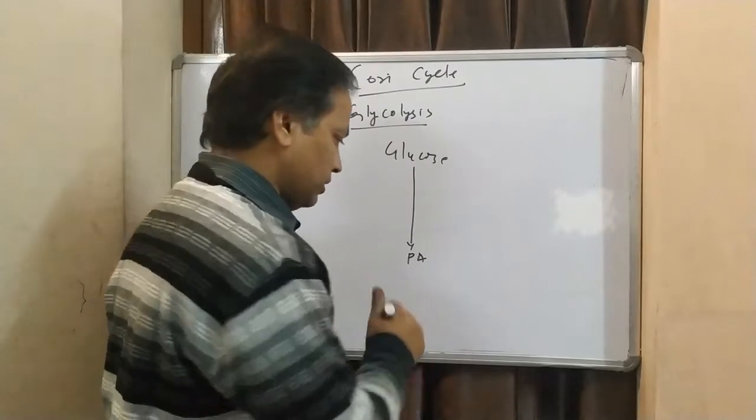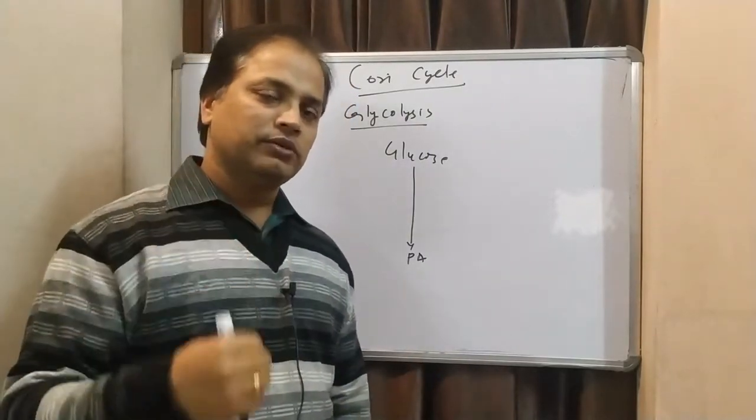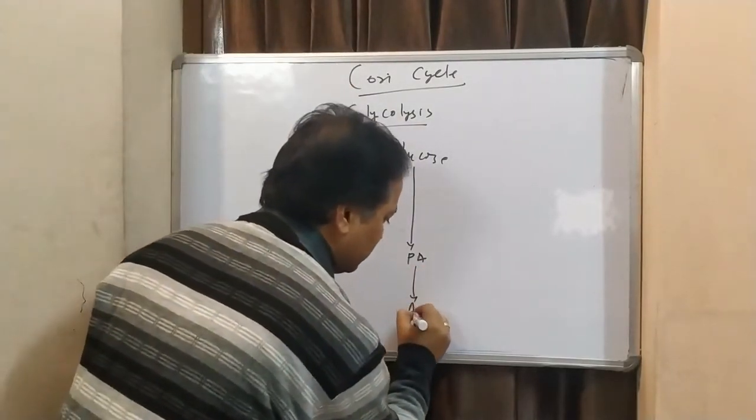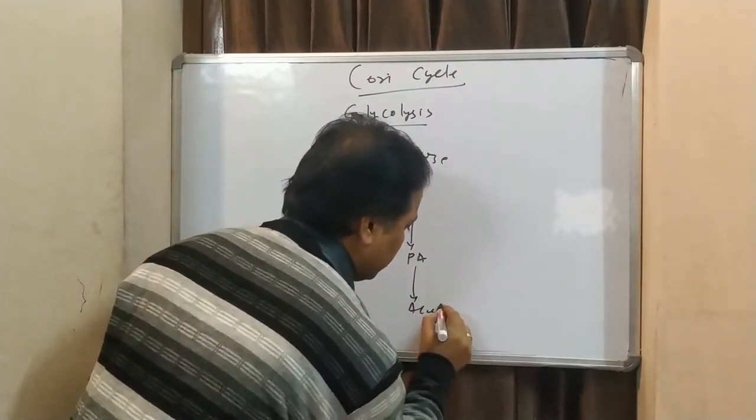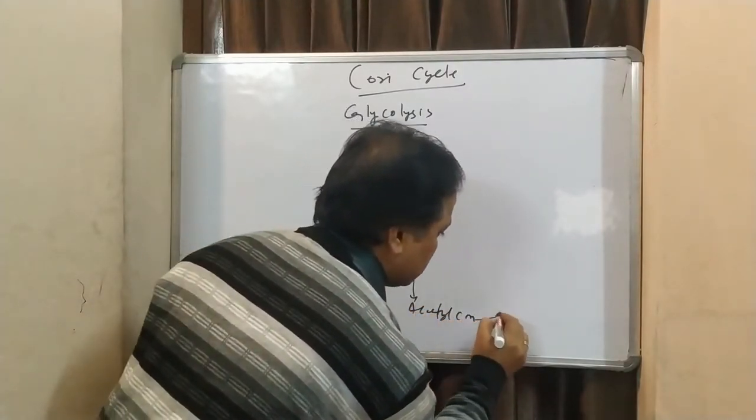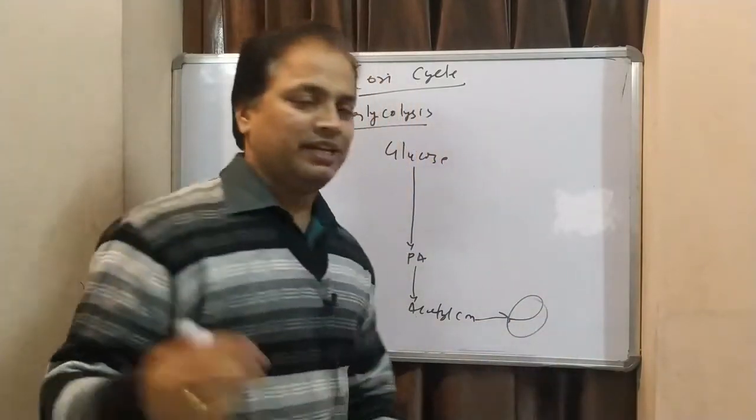Then, this pyruvic acid will go to the mitochondria. There, in mitochondria, pyruvic acid is converted to acetyl coenzyme. Acetyl coenzyme goes into citric acid cycle and gives you ATP.